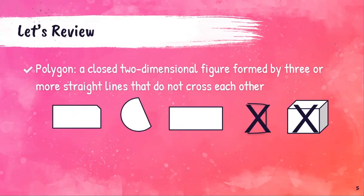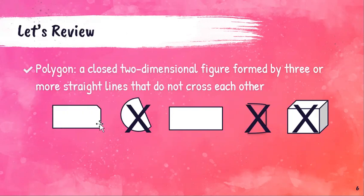The next part of our definition says that a polygon is formed by three or more straight lines. So in order to be a polygon, our lines have to be straight. There's one shape here that has a curved line — it does not have all straight lines, so that is not a polygon either. Then if I look at these last two: one has five lines — they're all straight and none of them cross each other, so that's a polygon. The other has four lines — they're all straight, none cross each other, and it's a closed shape. That's also a polygon.